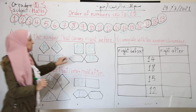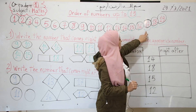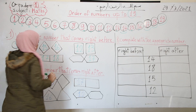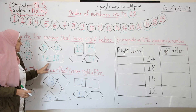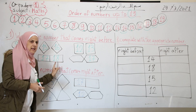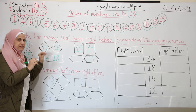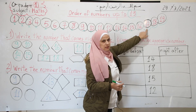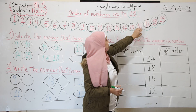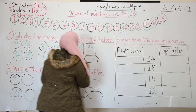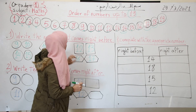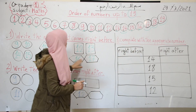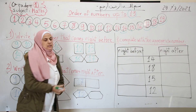Now for 18: I write 17, because 17 is right before 18. And for 17: 16 comes right before 17, so I write 16 here. To remember: 17 is the number that comes before 18, and 16 comes right before 17.